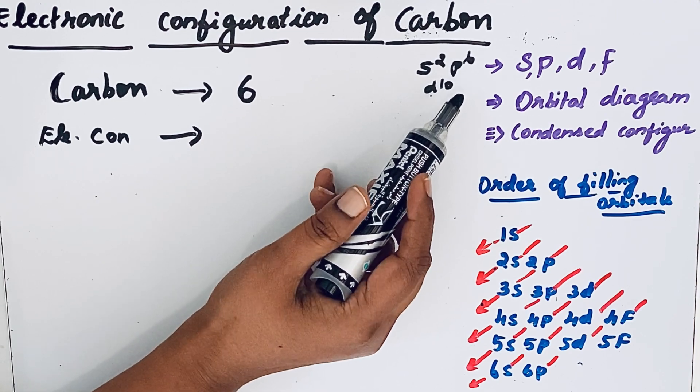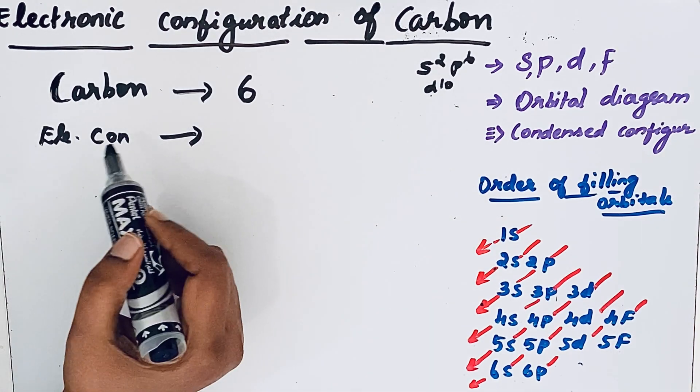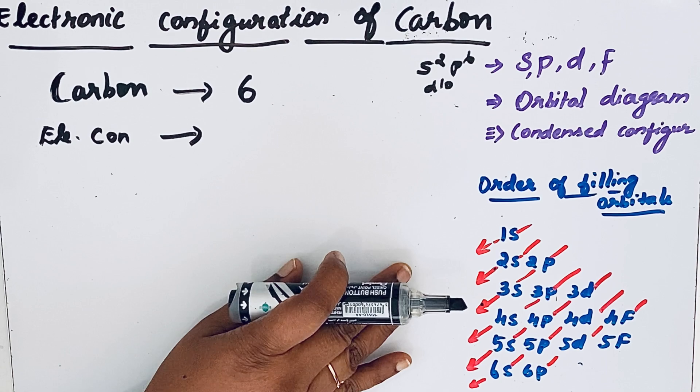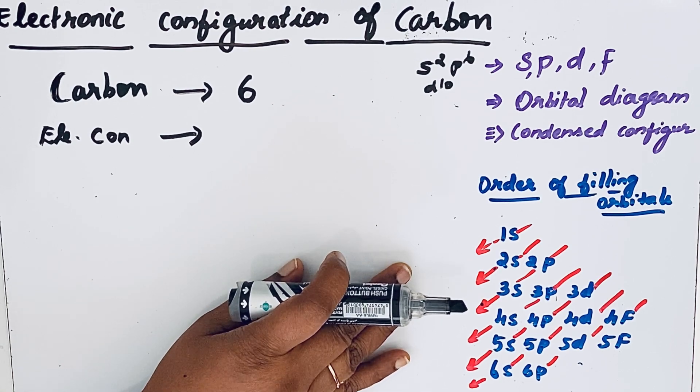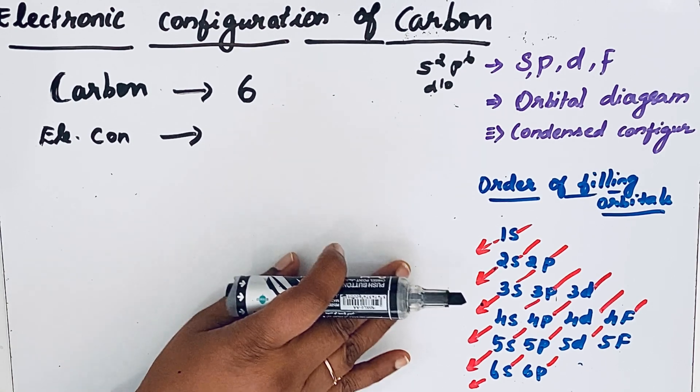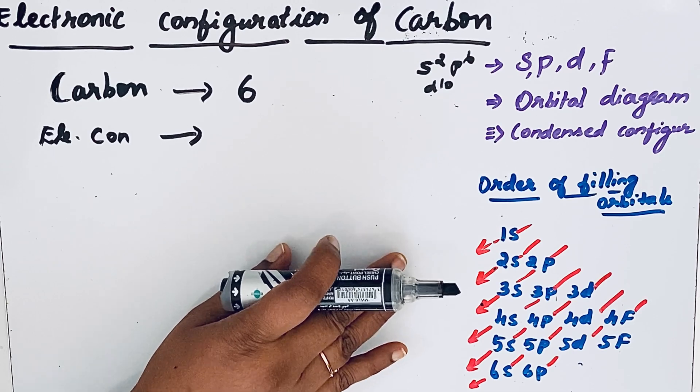To write that electronic configuration in SPDF notation, some order of filling orbitals is given here. This order of filling orbitals is based on the energy of the orbitals.